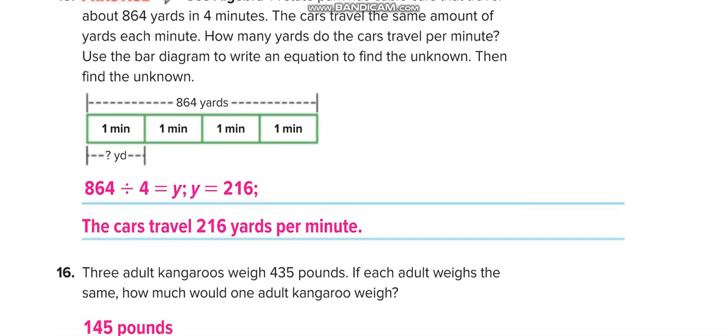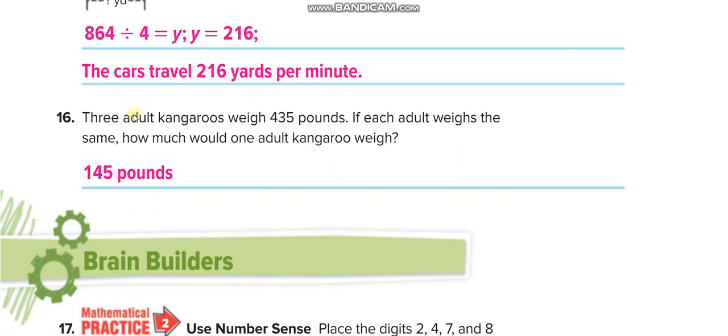Three adult kangaroos weigh 435 pounds, so 435 divided by 3, each one is 145 pounds.